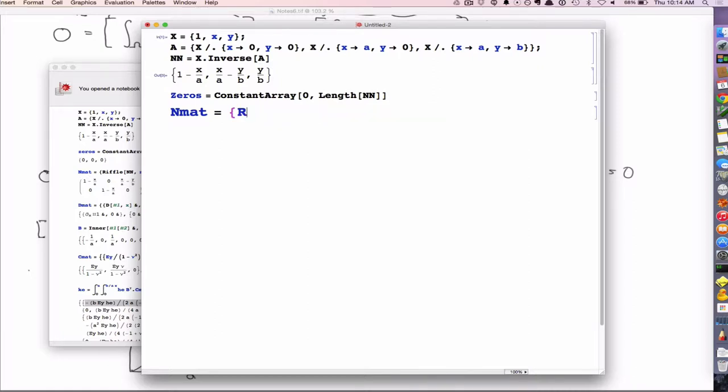And Mathematica has this cool function called riffle. So I'm going to riffle N with zeros, and then I'm going to riffle zeros with N.